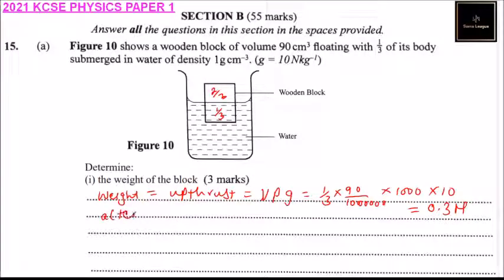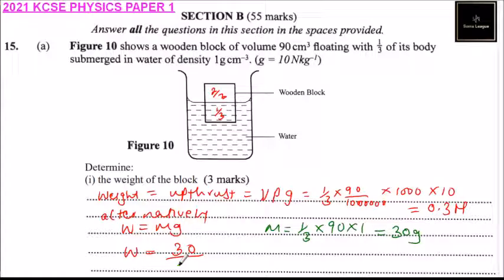Alternative method: We calculate weight equals mass multiplied by gravitational force. We can get the mass - mass equals a third of 90 multiplied by 1, that gives us 30 grams. So weight equals 30 divided by a thousand to make them kilograms, and multiply by the gravitational acceleration. Using that formula, when you compute that you should as well get 0.3 newtons. So that is the weight of the block.